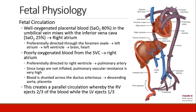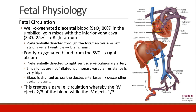In the fetal circulation, well-oxygenated blood from the placenta with a saturation of about 80% comes through the umbilical vein and mixes with blood in the fetal inferior vena cava, which has a saturation of about 25%. From there, it goes to the right atrium. In this diagram, we see the oxygenated blood coming from the umbilical vein, mixing with blood in the inferior vena cava, and going to the fetal right atrium.